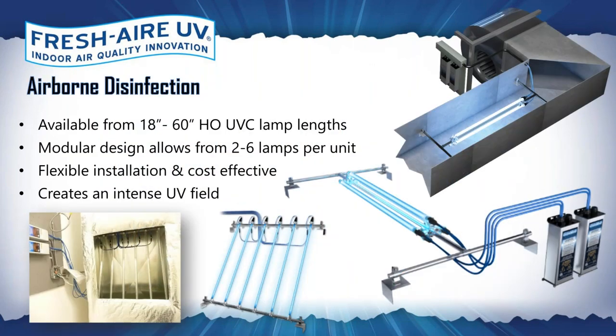For high-level airborne disinfection applications — for customers that want a one-pass kill and not have to wait for recirculation — we have our ADS, available in two formats: grid on the left and axial on the right. They address all the air in the duct on a single pass, available from 18-inch to 60-inch, from two lamps to six lamps. For a huge air handling system we might need two or three of them. These are exceptionally effective at disinfecting the moving air for any type of biological target.